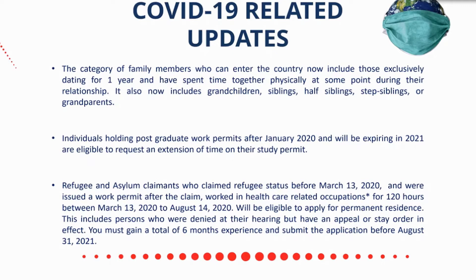COVID updates also include grandchildren, siblings, half-siblings, step-siblings, and grandparents now being included as eligible family members to enter Canada. For postgraduate work permit holders — as of January 27th of this year — if your postgraduate work permit is expiring within four months of your application date and you received it in 2020, you have the ability to submit an application to extend your postgraduate work permit for an additional 18 months.